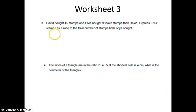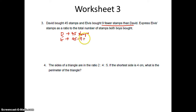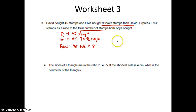Question 3. David bought 45 stamps and Elvis bought 9 fewer stamps than David. So David has 45 stamps. Elvis is 9 fewer than David, so it's 45 minus 9 which is 36 stamps. Express Elvis's stamps as a ratio of their total number of stamps for both boys. Total stamps is 45 plus 36 which is 81. So I want Elvis: 36 is to 81. Simplest form, divide by 9. So 4 is to 9.